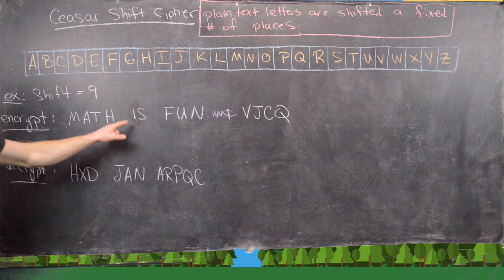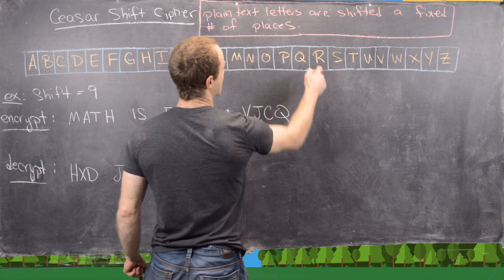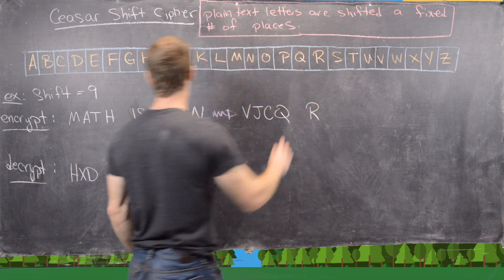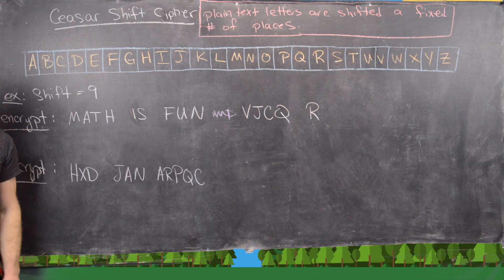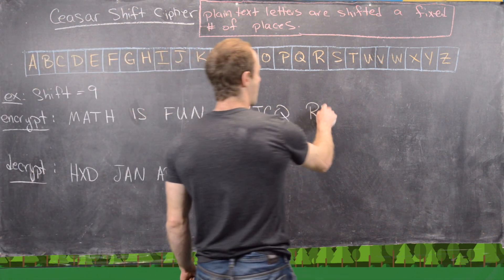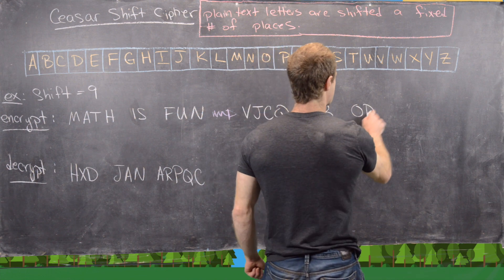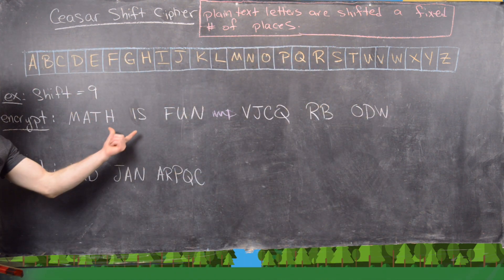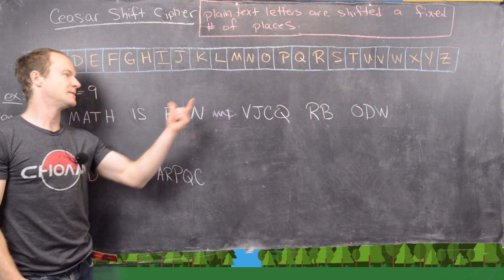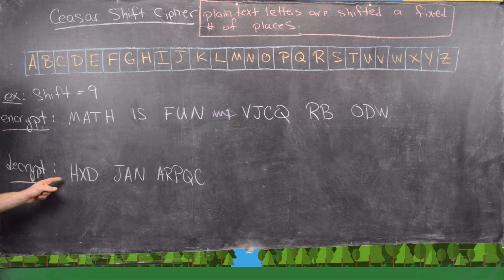Then I goes 9 places to R. And I'll just do the rest of them — S goes to B, F goes to O, U goes to D, N goes to W. So this would be the ciphertext. Our plaintext is 'math is fun' and our ciphertext would be that combination of letters.